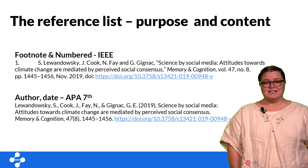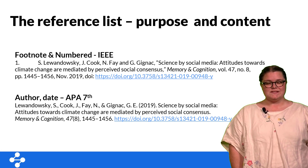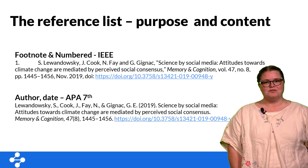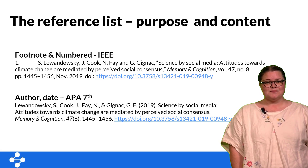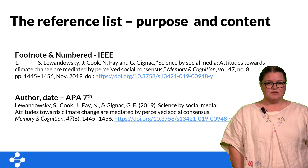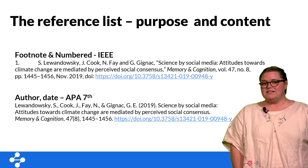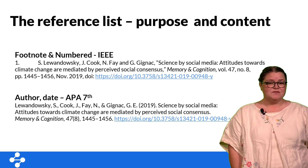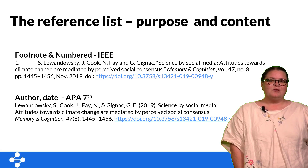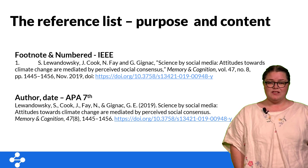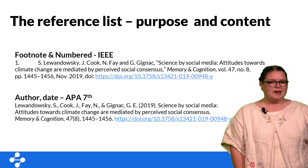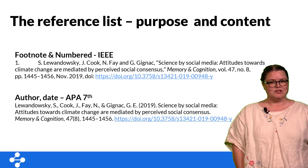Now that we've looked at in-text citations, let's move on to the reference list. The reference list is placed at the end of your document and contains detailed information for the sources you've used in text. The idea being that the reader can use the in-text reference you've provided to find the detailed reference information in your list and thus find the source for themselves. It makes sense then that when looking at the content of the reference list we think about the purpose, and while there are differences in formatting, fundamentally all styles contain the same information.